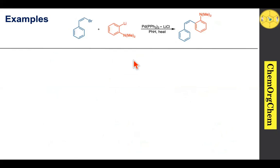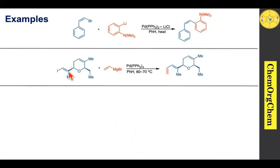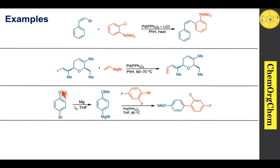Moving on to palladium-based examples: a bromo compound reacts with an organolithium species in the presence of a palladium catalyst to produce the carbon-carbon coupling product — demonstrating that palladium catalyst works with both organolithium and Grignard reagents. In another example, an iodo compound reacts with vinyl magnesium bromide under palladium catalysis. Another example shows a bromo compound converted to a Grignard reagent using magnesium and catalytic iodine, which then couples with another bromo compound; the fluorine group is unaffected by the palladium catalysis.